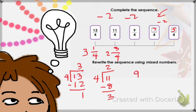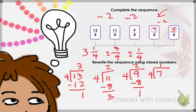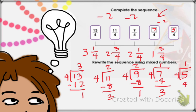For 9 over 4: how many 4s go into 9? We have 2 fours, so whole number 2, numerator 1, denominator 4 — that is 2 and 1 fourth. For 7 over 4: how many 4s go into 7? Only 1, so whole number 1, numerator 3, denominator 4 — that is 1 and 3 fourths. And for 5 over 4: how many 4s go into 5? Only 1, so whole number 1, numerator 1, denominator 4 — that is 1 and 1 fourth.